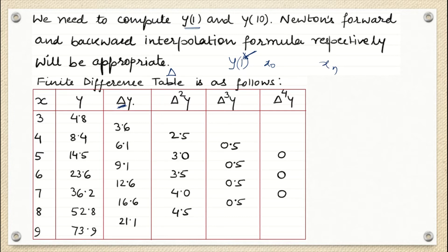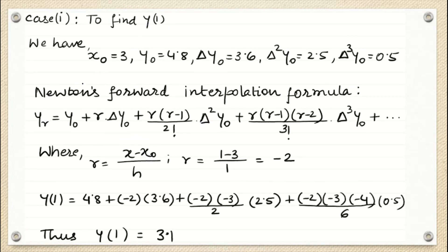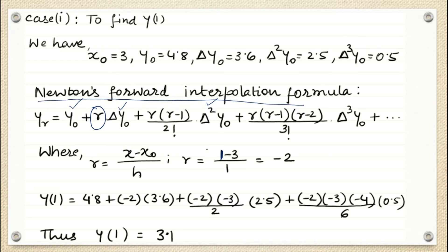We write the Newton's forward difference table — this is the question as it is — and then we find out the differences. To find y1, we use Newton's forward interpolation formula and write down all the corresponding values. The only unknown is r. Here r equals x minus x naught divided by h. In our case x is 1, x naught is 3, and h is 1, so r equals minus 2. Substituting all those values, we get y1.